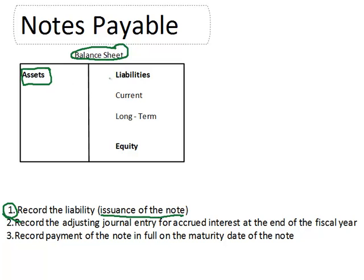The balance sheet also tells us who owns those assets. Liabilities are representative of the creditors — a banker maybe, or the IRS, or different entities that have loaned us money. And thirdly, it shows us the equity, which is the portion of the assets owned by the owners — typically stockholders in a corporation. Notes payable, as they relate to the balance sheet, are found underneath the liabilities.